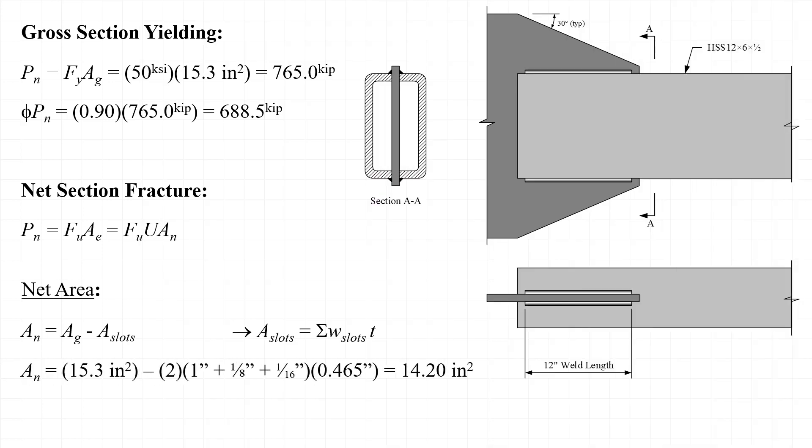So calculating the net area, we take the gross area, 15.3 inches squared, and we subtract out the area lost for two slots, one on each of the opposite walls of the tube. The slots are each cut for a 1-inch thick gusset plate, and the slots are made an eighth of an inch wider than the thickness of the gusset. Now, that value isn't standardized, at least not to my knowledge. I just assumed that an eighth of an inch of tolerance would be appropriate for a gusset plate of that thickness. I've added an additional 1/16 of an inch for possible damage around the edge of the slot as it was fabricated, and then we multiply by the design wall thickness 0.465 inches. So the net area that we'll use is 14.2 inches squared.